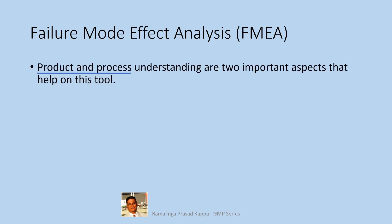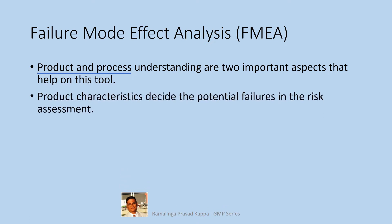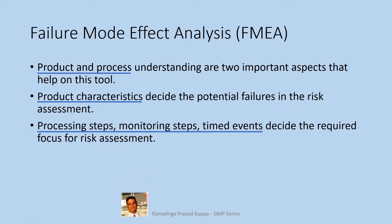Product and process understanding are two important aspects that help with this tool. FMEA is a product and process centered tool. It captures the potential risks of the product and processes, so it is very important that the characteristics of the product and processes are understood well. Product characteristics decide the potential failures in the risk assessment. The chemical behavior of the product plays a very important role in identifying the associated risks. Impact of packaging conditions and storage conditions of the product should also be considered. Processing steps, monitoring steps, and timed events decide the required focus for risk assessment.